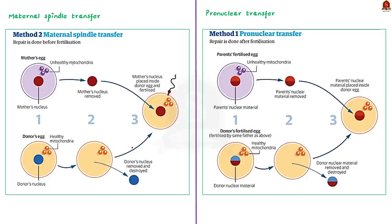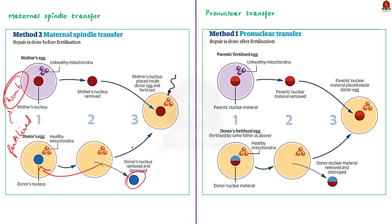In maternal spindle transfer, the nucleus is removed from the donor egg, then the mother's nuclear DNA is removed from her egg cell, and the nucleus in the donor egg is replaced with the mother's nuclear DNA. The egg is now free of defective mitochondrial DNA and carries the healthy mitochondrial DNA from the donor. The combined egg is then fertilized and the embryo is implanted into the mother's womb. This prevents the passage of defective mitochondrial DNA to the child. Note that the maternal spindle transfer process is done before fertilization.